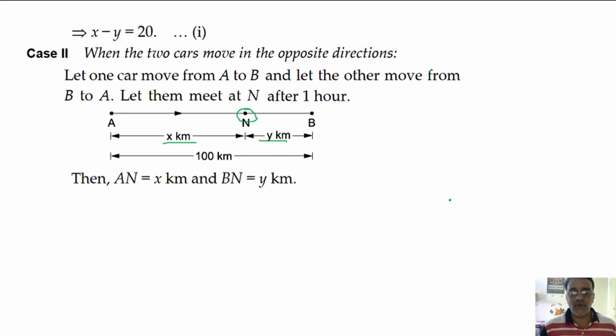What you will get if you add AN and BN? AB. Right. Very good. So AN plus BN equals AB. That is x plus y equals 100. Let it be equation number 2.